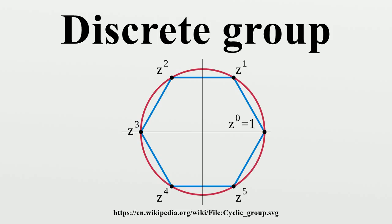A lattice in a Lie group is a discrete subgroup such that the Haar measure of the quotient space is finite.